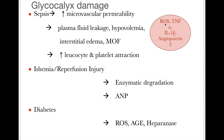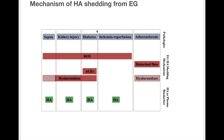In ischemic reperfusion injury, due to release of ANP and enzymatic degradation, the glycocalyx gets damaged. In diabetes, because of advanced glycation end products and enzymatic damage by heparinase and reactive oxygen species, the glycocalyx is also damaged. In hypervolemia — after fluid therapy or during heart failure conditions — stretching of the ventricles causes release of atrial natriuretic peptide (ANP), which also causes damage to the glycocalyx. This summarizes how various conditions cause damage and shedding of the endothelial glycocalyx by releasing various mediators.